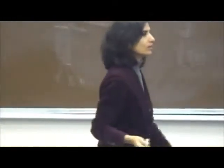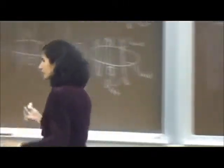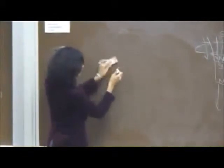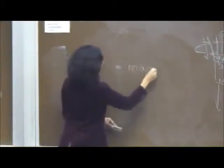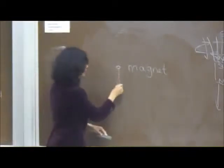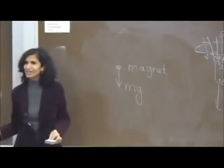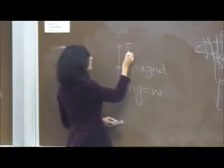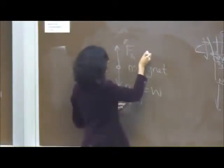A student asks what happens as the magnet continues falling. The free body diagram of the magnet shows mg downward and magnetic force F_B upward. For the non-magnet, F_net = mg = ma, so acceleration is g = 9.8 m/s². For the magnet, both contributions matter. The magnetic repulsion force depends on speed - as gravity accelerates the magnet, the speed increases, which increases the induced current and thus the repulsion force.